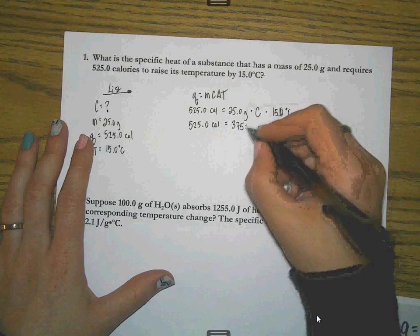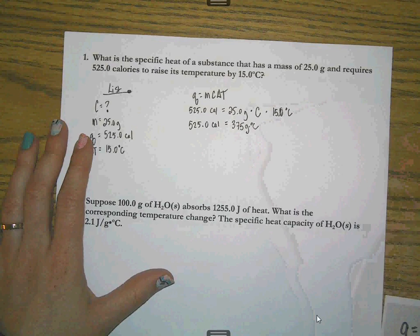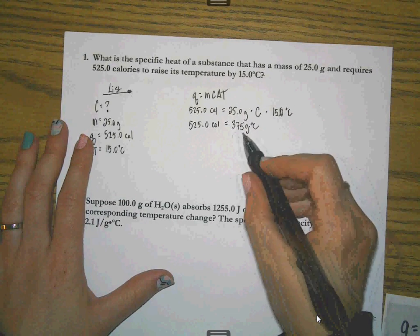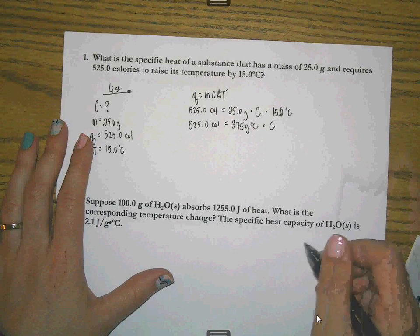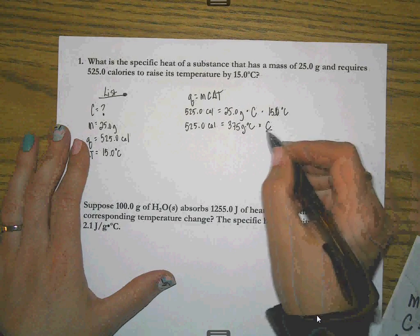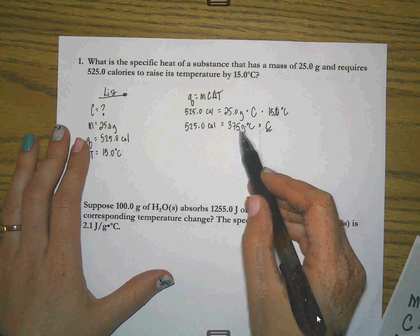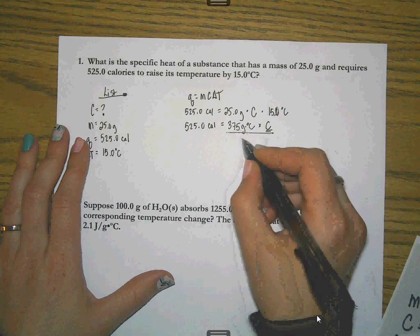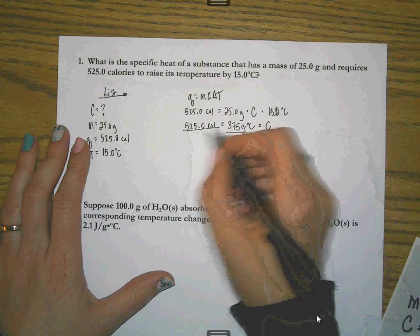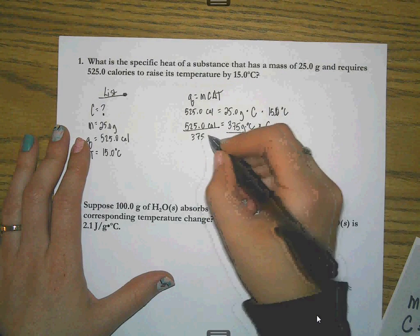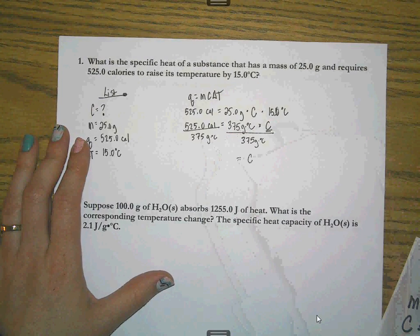I'll have 525.0 calories. Now I'm going to go ahead and do 25 times 15. That's 375. The grams and the degrees Celsius don't go anywhere. They don't cancel out. So 375 grams times degrees Celsius times the letter C. Well, now I need to get this C all by its lonesome, which means I need to divide both sides by 375 grams times degrees Celsius and solve for C.